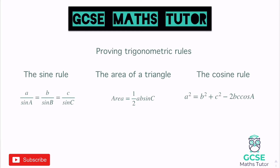I think it's a little bit contradictory that you have to learn how to use them before you know how they are created, but this is going to focus on actually proving them. You'll need a good understanding of SOHCAHTOA and Pythagoras as well. We're going to prove the sine rule, the area of a triangle using sine, and the cosine rule — in that order, which I think is also the order of difficulty, with the cosine rule probably being the hardest.